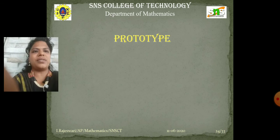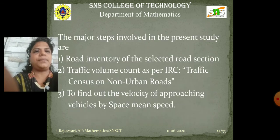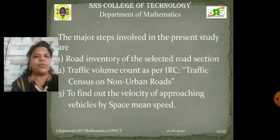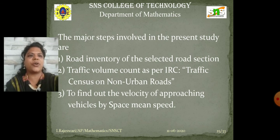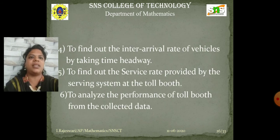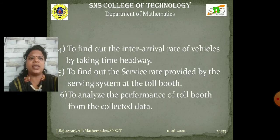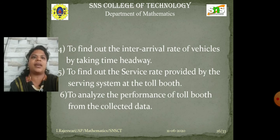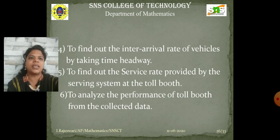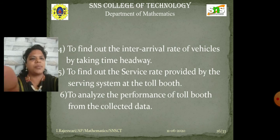Next, we move to the fourth stage: Prototype. The major steps involved in the present study are: first, road inventory of the selected road section; second, traffic volume count as per IRC; third, traffic sensors on non-event roads; fourth, to find out the velocity of approaching vehicles by space mean speed; fifth, to find out the inter-arrival rate of vehicles by taking time headway; sixth, to find out the service rate provided by the servicing system at the toll booth; and seventh, to analyze the performance of toll booths from the collected data.